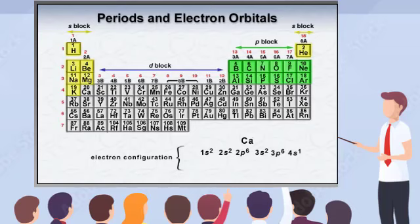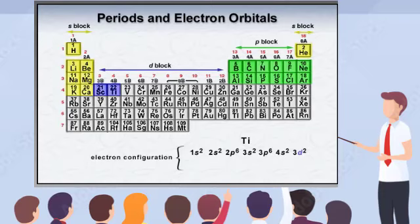Elements in periods four through seven have electrons in orbitals from lower energy levels, and the sequential filling pattern sometimes varies. You will learn more about electrons in the S, P, D, and F blocks, and how these relate to the various periods in a couple of scenes.